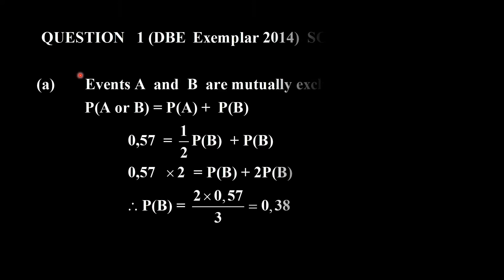So let's look at the first solution here. We are given that events are mutually exclusive, right? In other words we can then change the addition rule: probability of A or B is the probability of A plus the probability of B. We don't have to subtract.